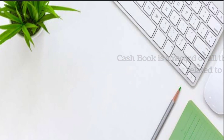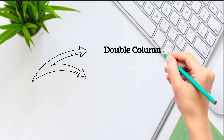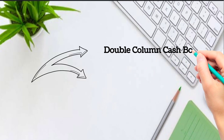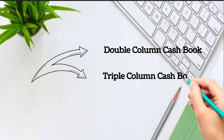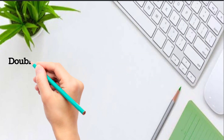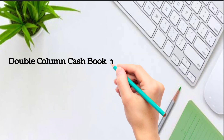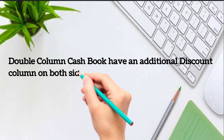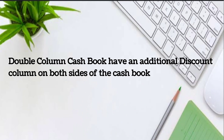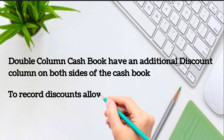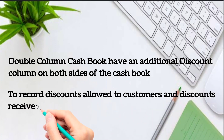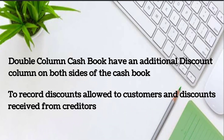There are two types of cash book: double column cash book and triple column cash book. In double column cash book, a discount column is included on both debit and credit sides to record the discounts allowed to customers and the discounts received from creditors respectively.